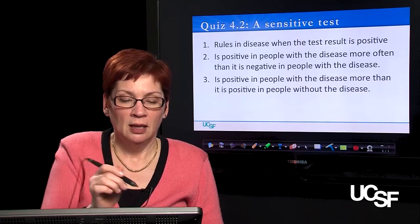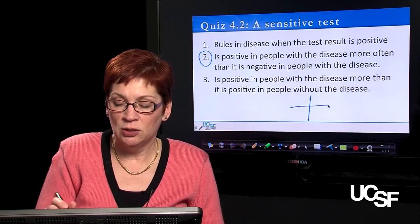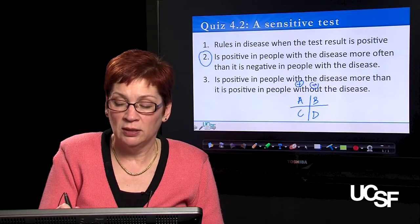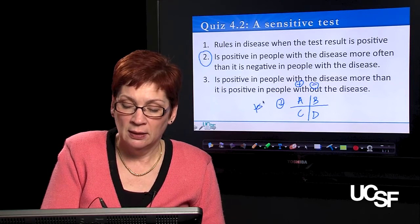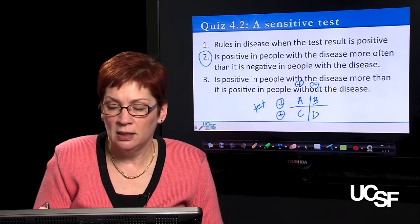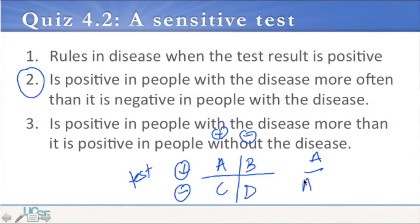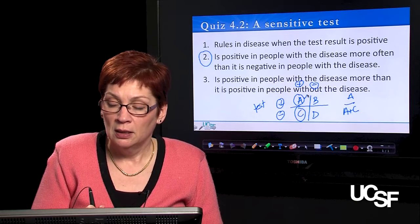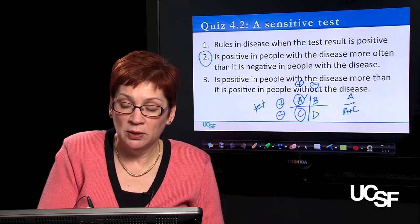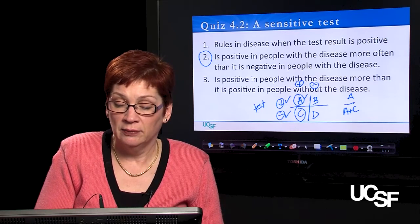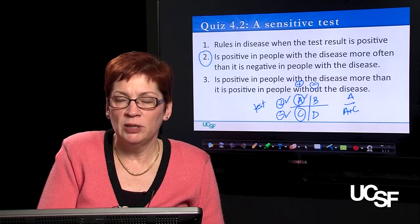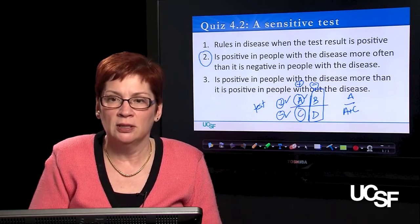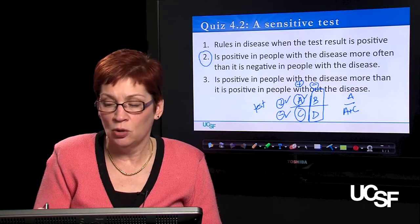The answer is number two. Sensitivity is A over A plus C — the proportion of people with disease who test positive. A very sensitive test has more test results in quadrant A than in quadrant C. For answer three to be true, we'd be talking about a different statistic entirely, because sensitivity doesn't reflect performance of the test in people without the disease — that column contains B's and D's, which don't appear in the sensitivity formula.